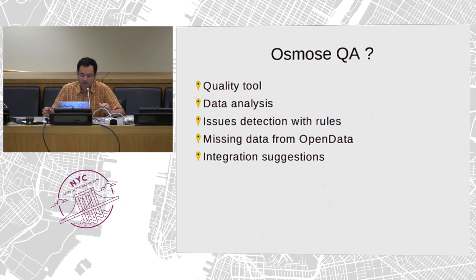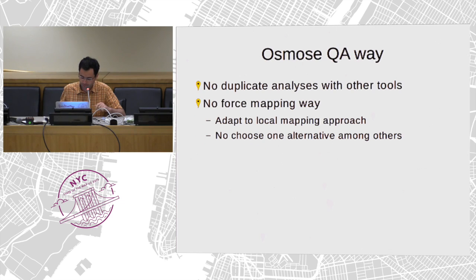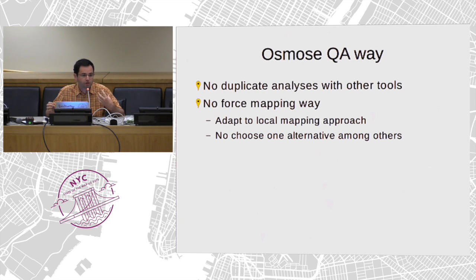It does data analysis with a list of rules, and it also checks completeness with open data by checking for missing open data. It's not in competition with other quality tools because we don't duplicate the rules. When there are rules in KeepRight or another tool, we don't re-implement them again in Osmose.